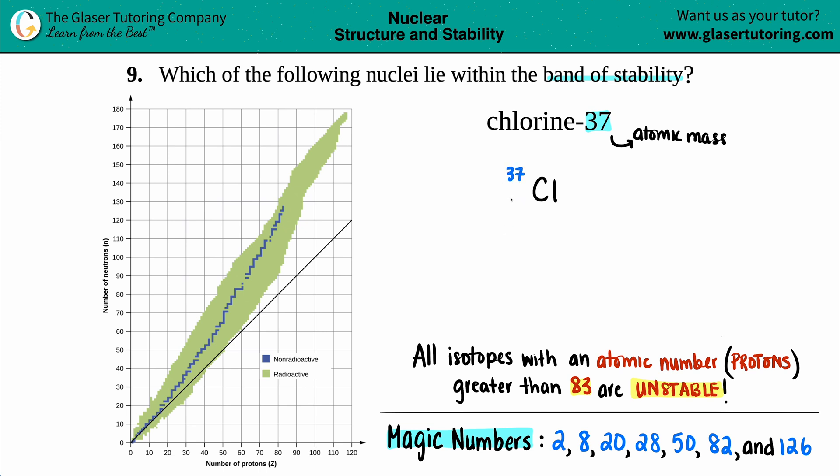Now we don't have a number on the bottom, but the number on the bottom is always the atomic number, and the atomic number is the number of protons. This can be found on the periodic table. All elements have their own unique number of protons, so if I look at my periodic table, the atomic number for chlorine is always going to be 17.